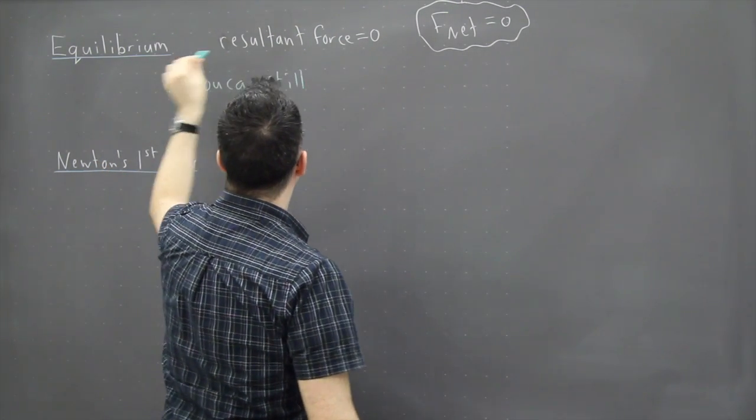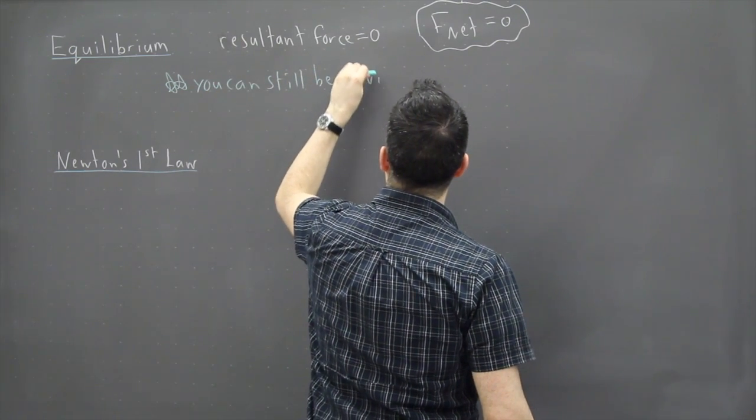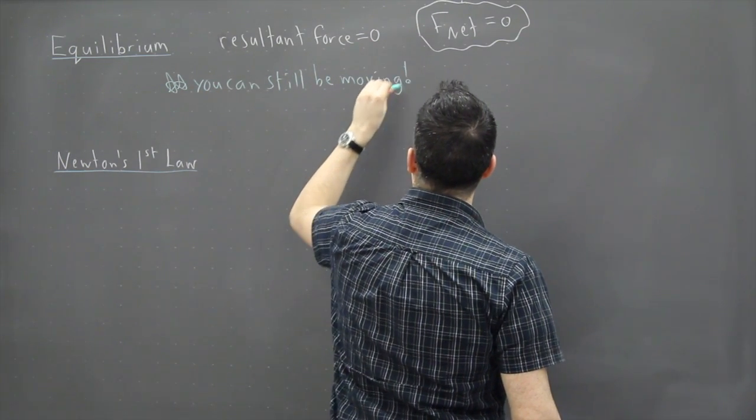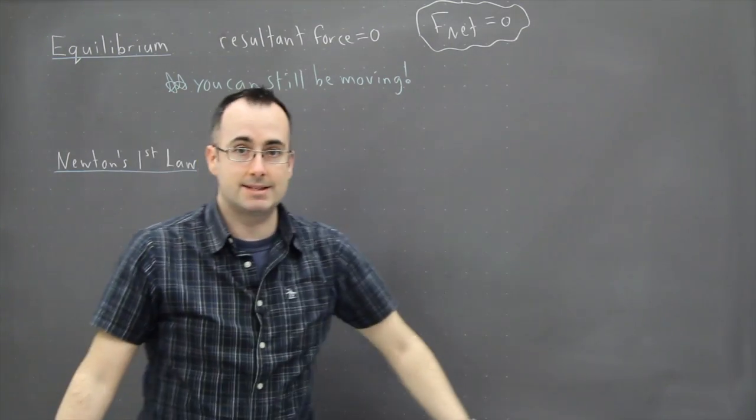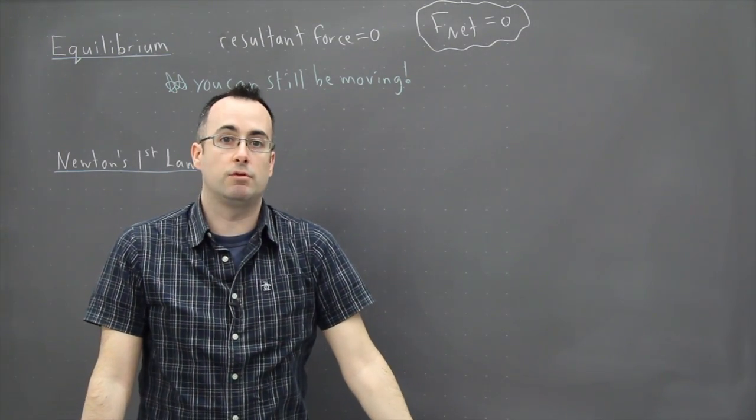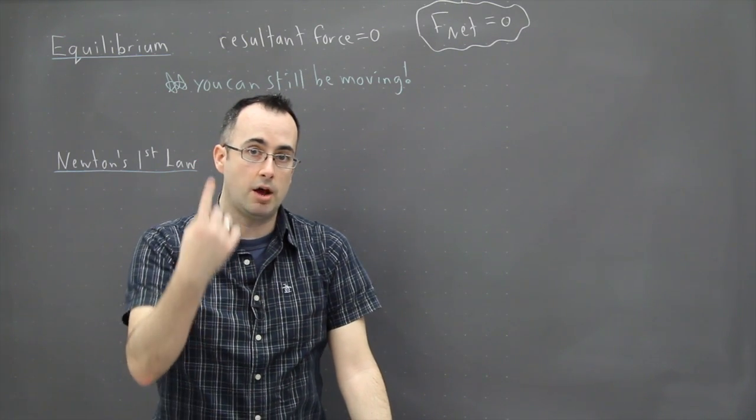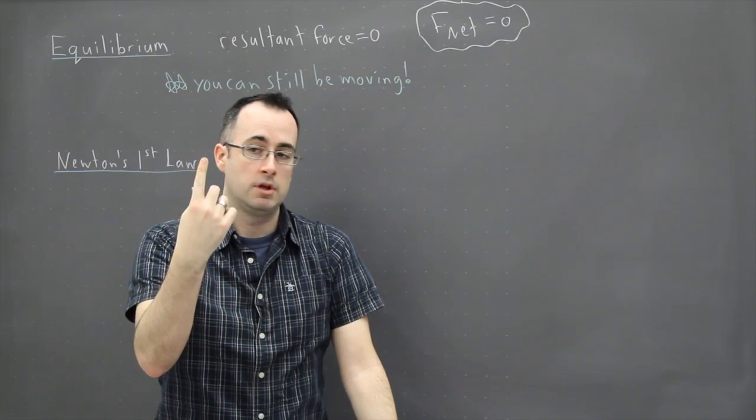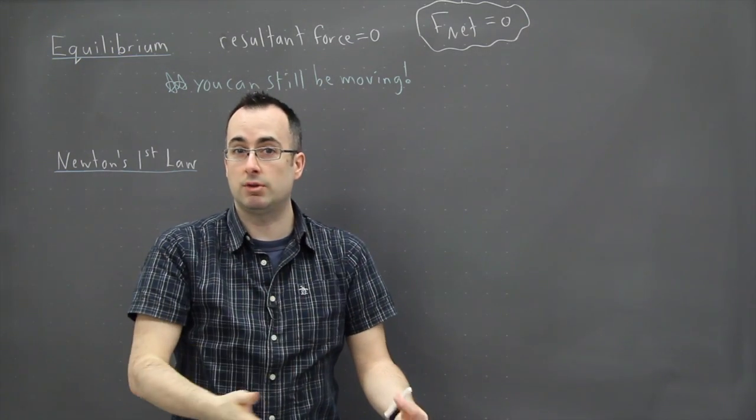I think a lot of students think as soon as you have a net force of zero, it means that you're stopped, but you can still be moving. Right now, as I stand still, my net force is zero because I have a downwards gravitational force and an upwards normal force. So I'm not moving and my net force is zero, so I'm in equilibrium.